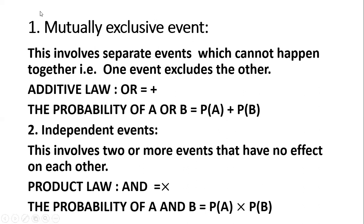We have two ways of describing combination of probability. The first is mutually exclusive events. This involves separate events which cannot happen together — that is, one event excludes the other — and we normally use the additive law. The word we normally use is 'or'. Whenever you see a probability of this event or a second event happening, you add the probabilities together. So probability of A or B happening equals probability of A plus probability of B.